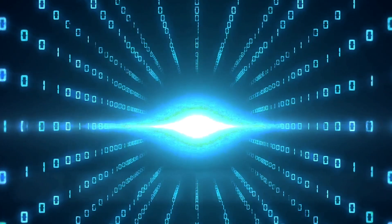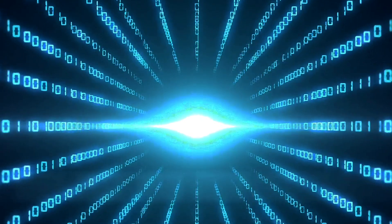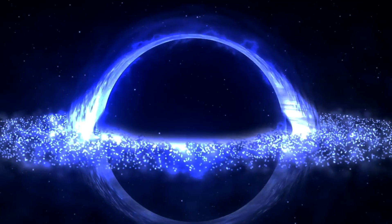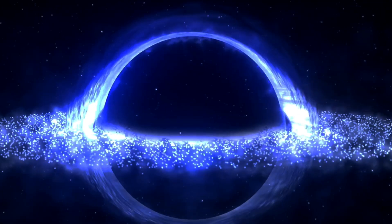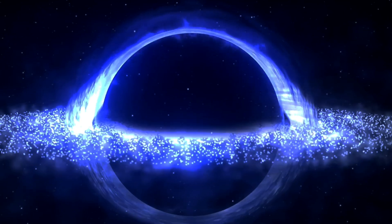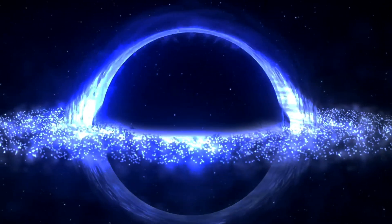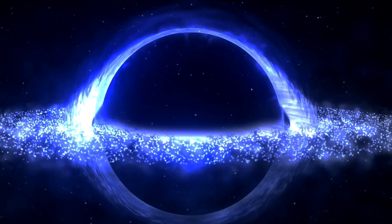If black holes could realistically form within our universe, then that means we should be able to do two things with them. We should be able to calculate under which physical circumstances they can form and hence where we expect to find them and what signatures they ought to give off. And then we should be able to actually go out and find them, detect their signatures, and even measure fundamental properties about them if our technology ever reaches that point.